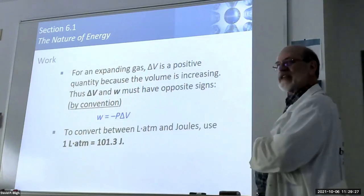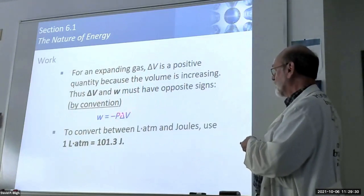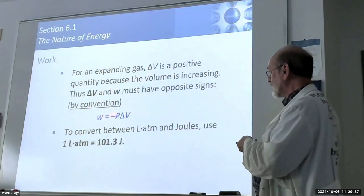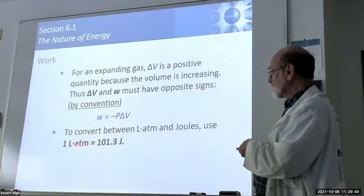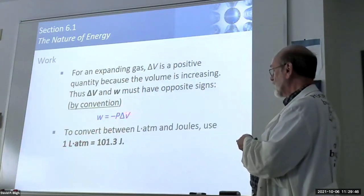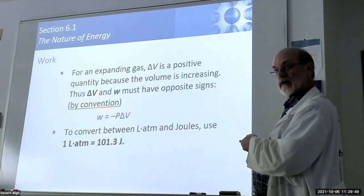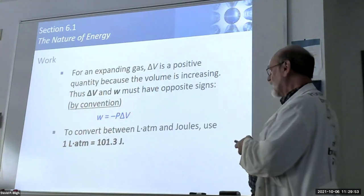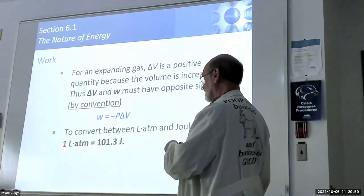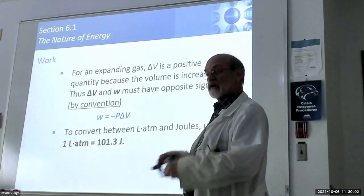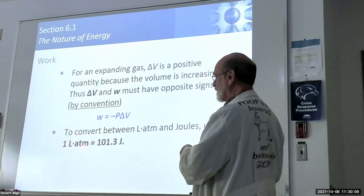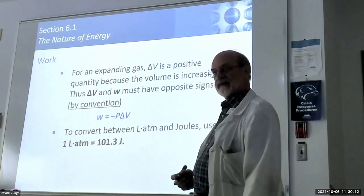The standard units we use: pressure is in atmospheres, change in volume is in liters, so the units of measure for work are liter-atmospheres. If we have one atmosphere and it moves one liter in volume, we have one liter-atmosphere. But like the calorie, that's as far as you can go - you need to relate it to joules. The conversion factor is: one liter-atmosphere equals 101.3 joules.